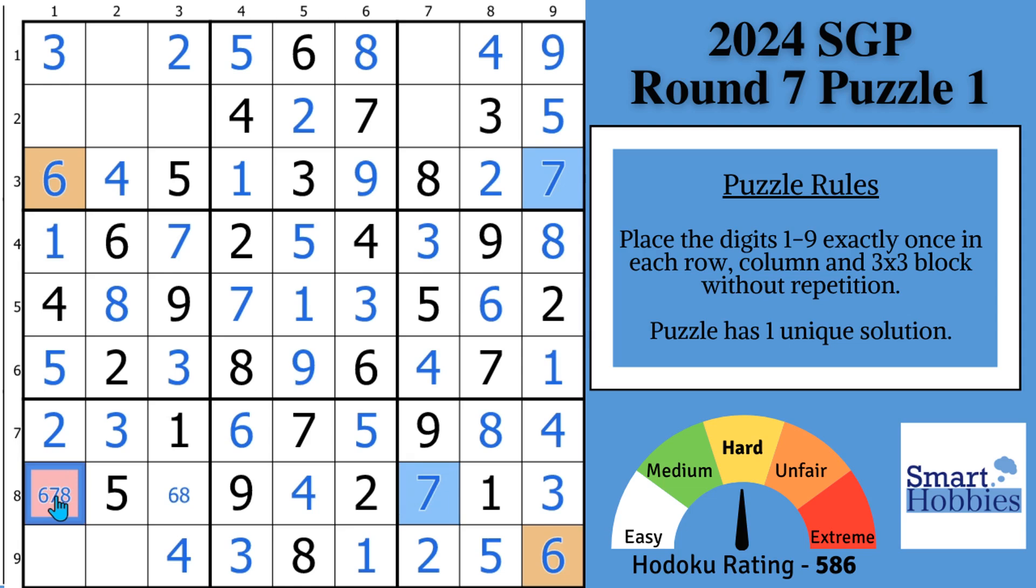This is a Sudoku remote pair, and this is a super powerful strategy because it doesn't just eliminate one candidate, it eliminates two. You can eliminate both the 6 and the 7 from this cell right here. Because, if you put a 6 or 7 in this cell, you would run out places to put 6 and 7s in that nice remote pair chain. This is awesome stuff. And if you want to learn more about remote pairs, you can check out this tutorial.